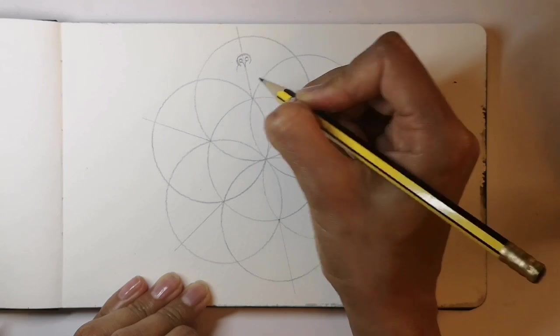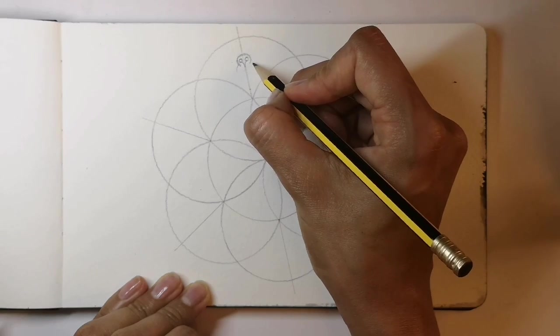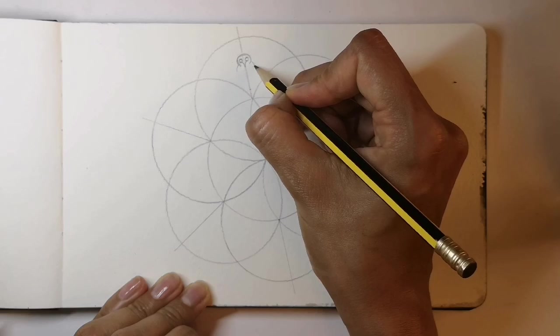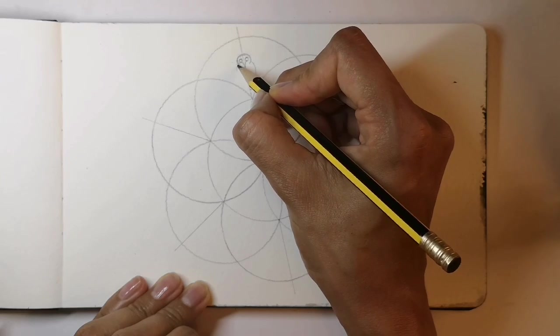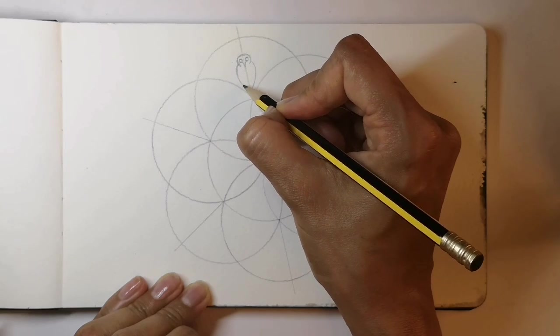Now the body, curved and slightly heart shaped, one side of that centre line and the other. Use the centre line to help make it symmetrical.